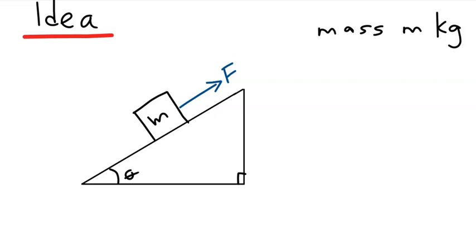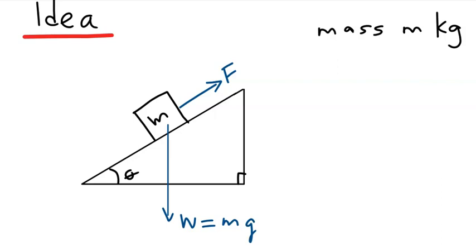The diagram shows an upward force being applied to mass M. To sketch the free-body diagram for this mass M — there is only one body, so there is only one free-body diagram — we need to list all forces acting directly on mass M in addition to force F. The first is the weight of mass M acting vertically downward, labeled W, which equals mg. The second is the normal force acting perpendicular to the plane. So there are three forces: F, N, and the weight.